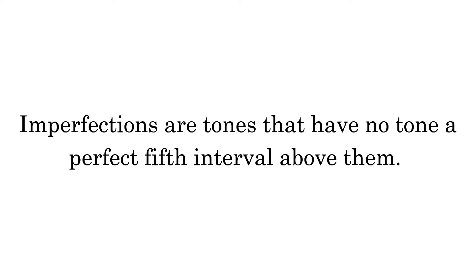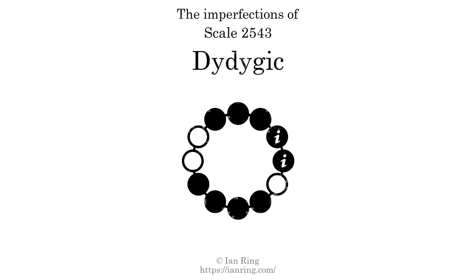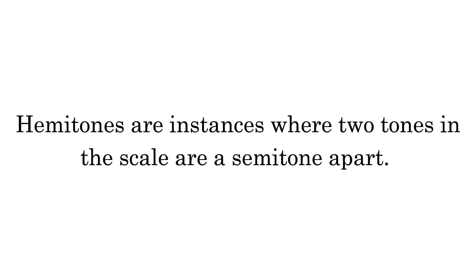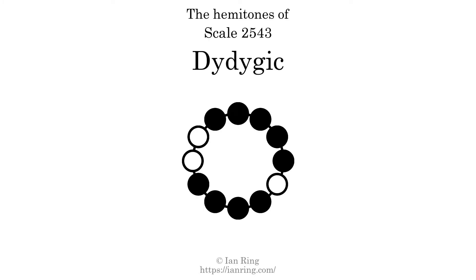Imperfections are tones that have no tone a perfect 5th interval above them. This scale has 2 imperfections. Hemitons are instances where 2 tones in the scale are a semitone apart. This scale has 7 hemitons.